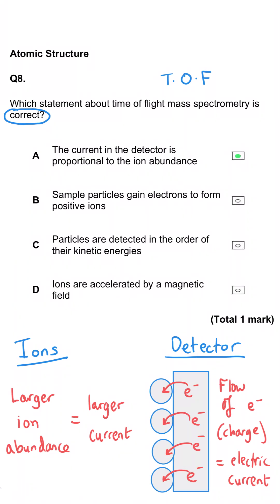In a test, we'd move on now, but just to falsify the last three, it says sample particles gain electrons to form positive ions. They don't. They gain protons to form positive ions, or they lose electrons. C says that particles are detected in order of kinetic energy. No, they all have the same kinetic energy. And D says they're accelerated by a magnetic field. It's an electric field.